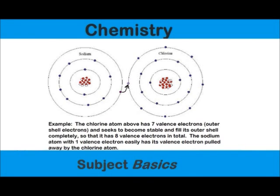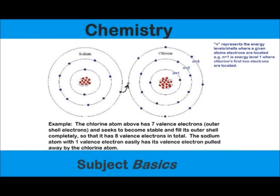Now the shells or energy levels will typically be represented by the letter N and the number 1, 2, 3, 4, etc. The first energy level, N1, energy level 1, is closest to the nucleus. The second energy level is a little farther away from the nucleus than the first, and the third energy level is a little farther away than the second, and so on.